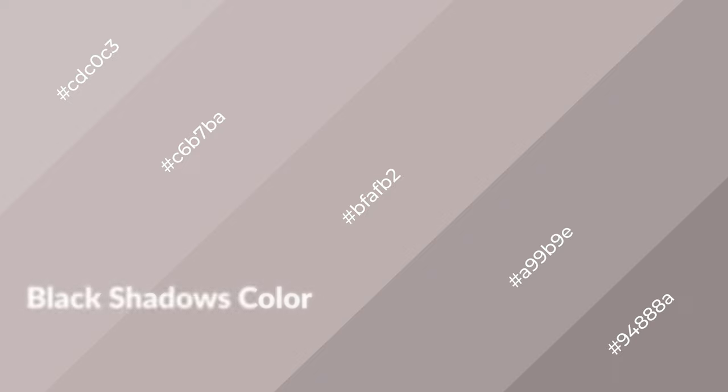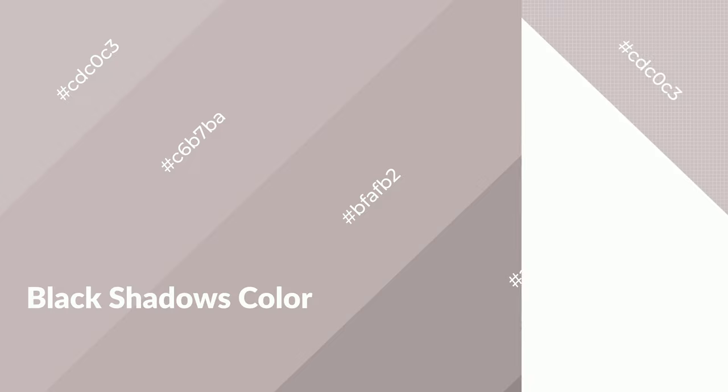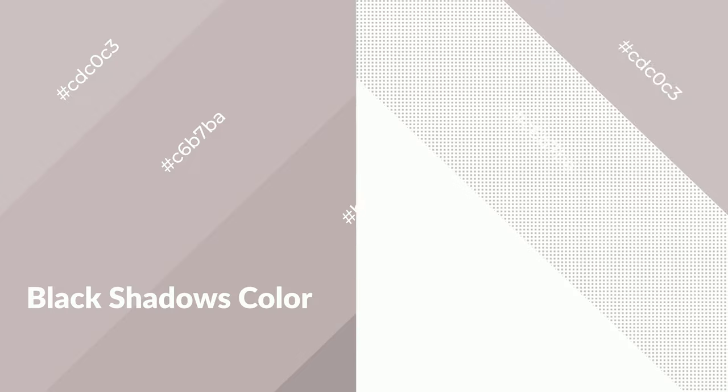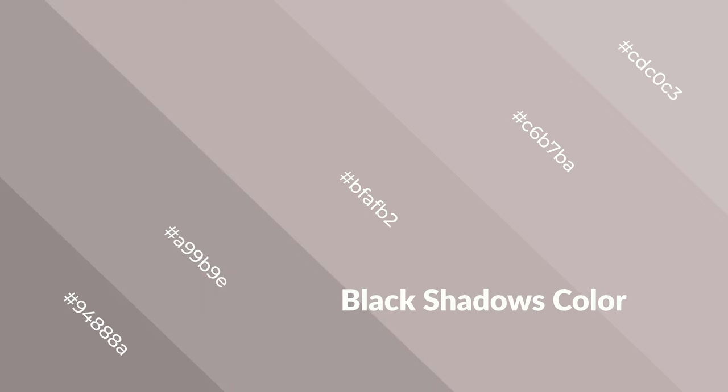Black shadows is a warm color and it emits cozier and active emotions. Warm colors are symbols of warmth, fire, heat, and sunshine. They also evoke joy, passion, love, and even anger. You can see them used in restaurants and gyms.